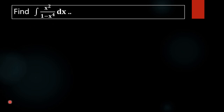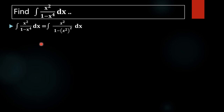At first, what we are going to do is we are just rewriting this denominator, that is 1 minus x raised to 4, as 1 minus x squared whole square. Then in the next step, this is in the form a squared minus b squared.